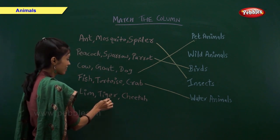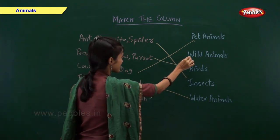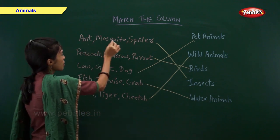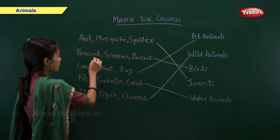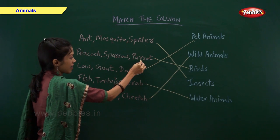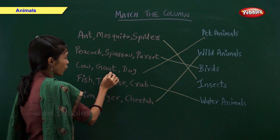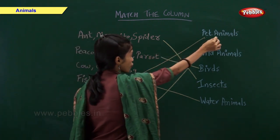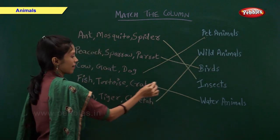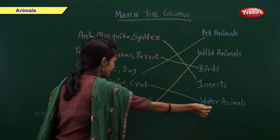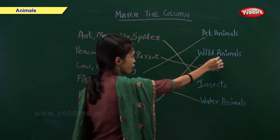Lion, tiger and cheetah are examples of wild animals. Ant, mosquito and spider are examples of insects. Peacock, sparrow and parrot are examples of birds. Cow, goat and dog are examples of pet animals. Fish, tortoise and crab are examples of water animals.